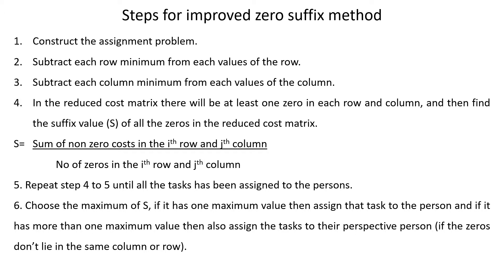The sixth step is to choose the maximum S. If it has one maximum value, assign the task to that person. If it has more than one maximum value, assign the task to the respective persons, or if the zeros do not lie in the same column or row. Let's do one example to understand these steps.